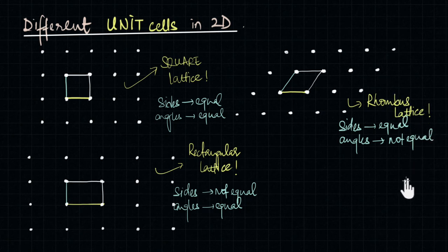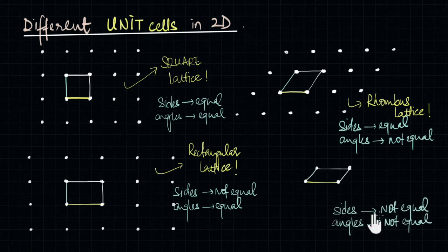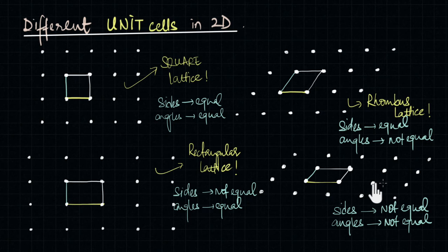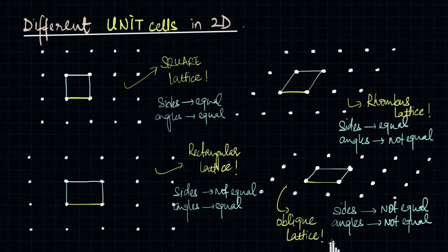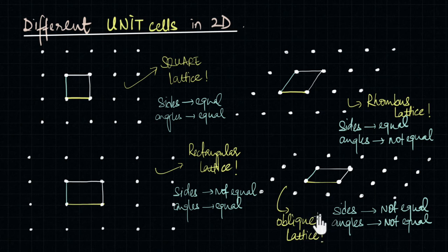Is there any other shape we are missing? Well, we can have a parallelogram in which neither the sides are equal nor the angles are equal, and the lattice made by such oblique-shaped parallelograms we can call the oblique lattices. We can now take a step back and say that all Bravais lattices can be classified as square, rectangular, rhombus, or oblique. However, it turns out that this picture is neither 100% correct nor 100% complete.